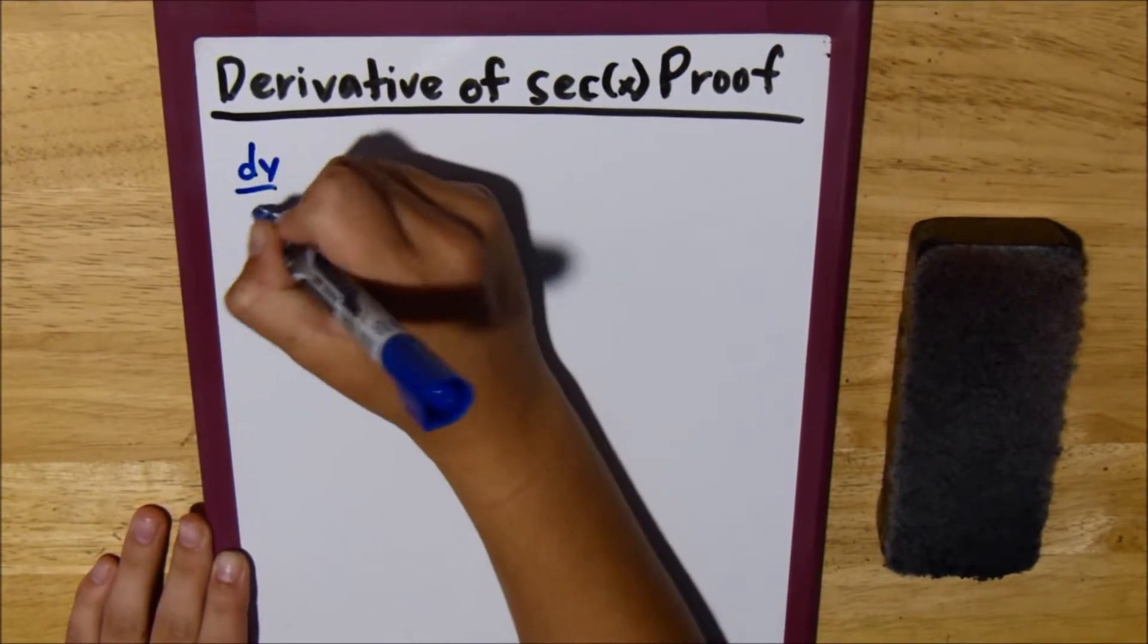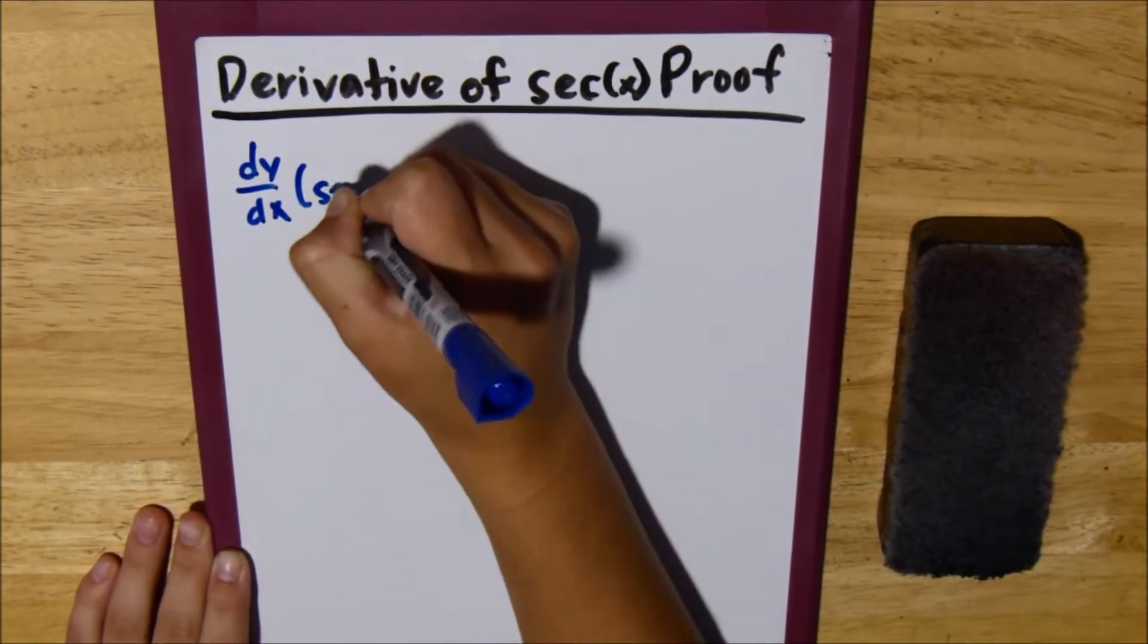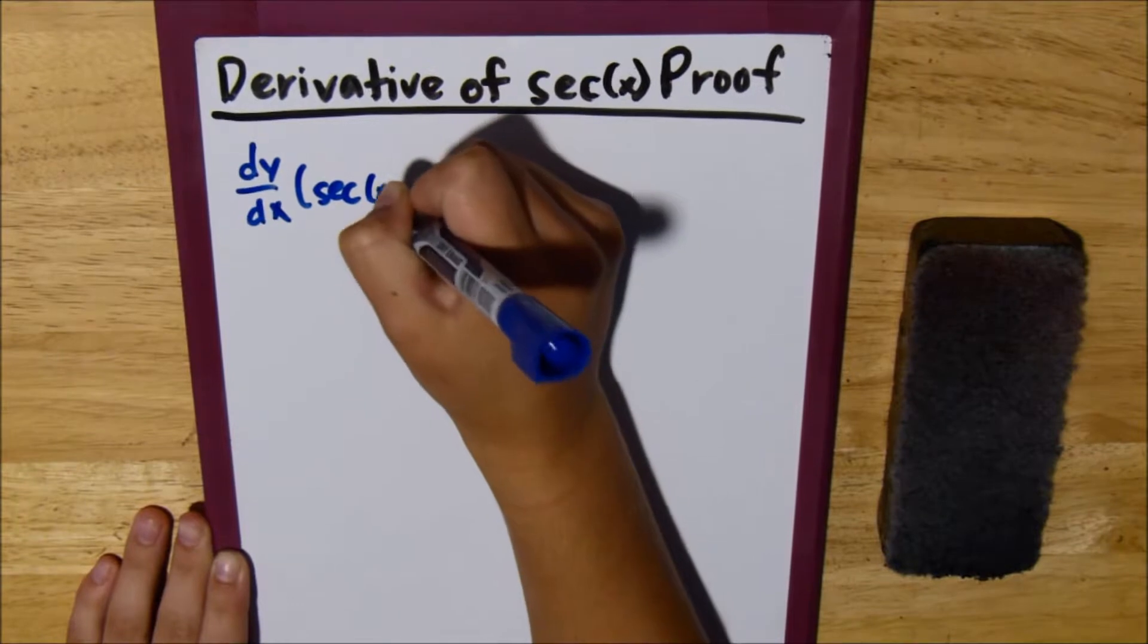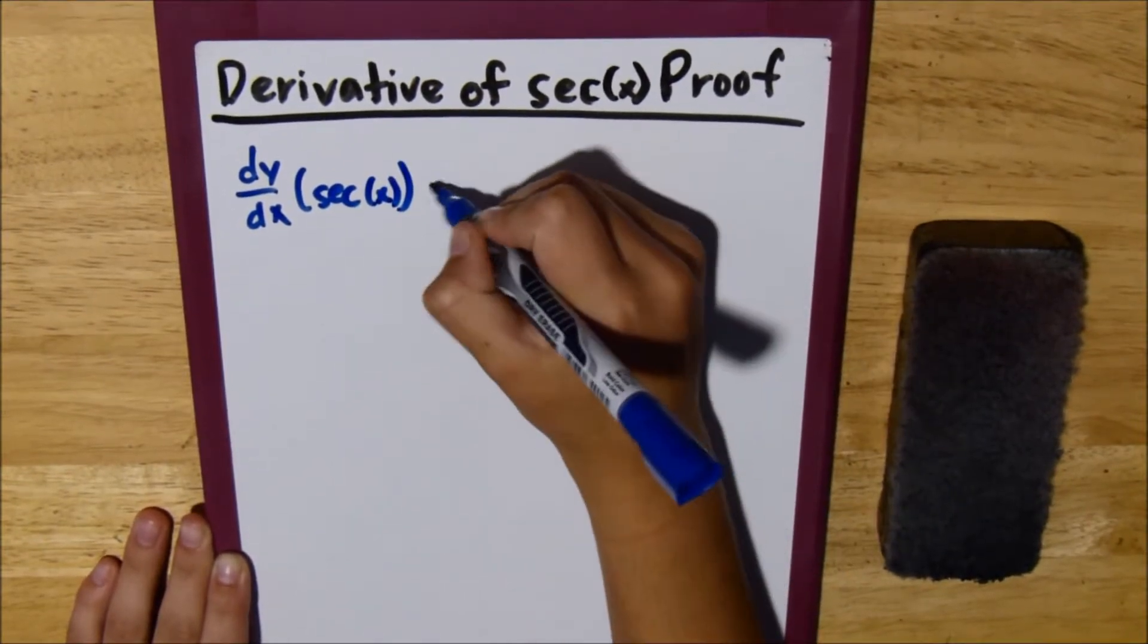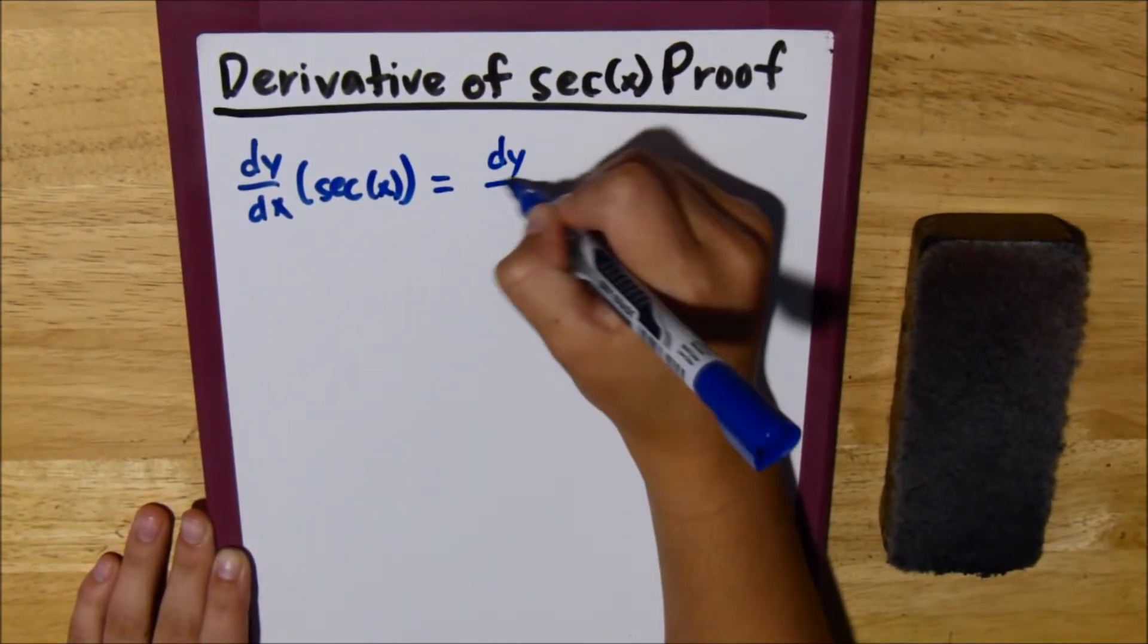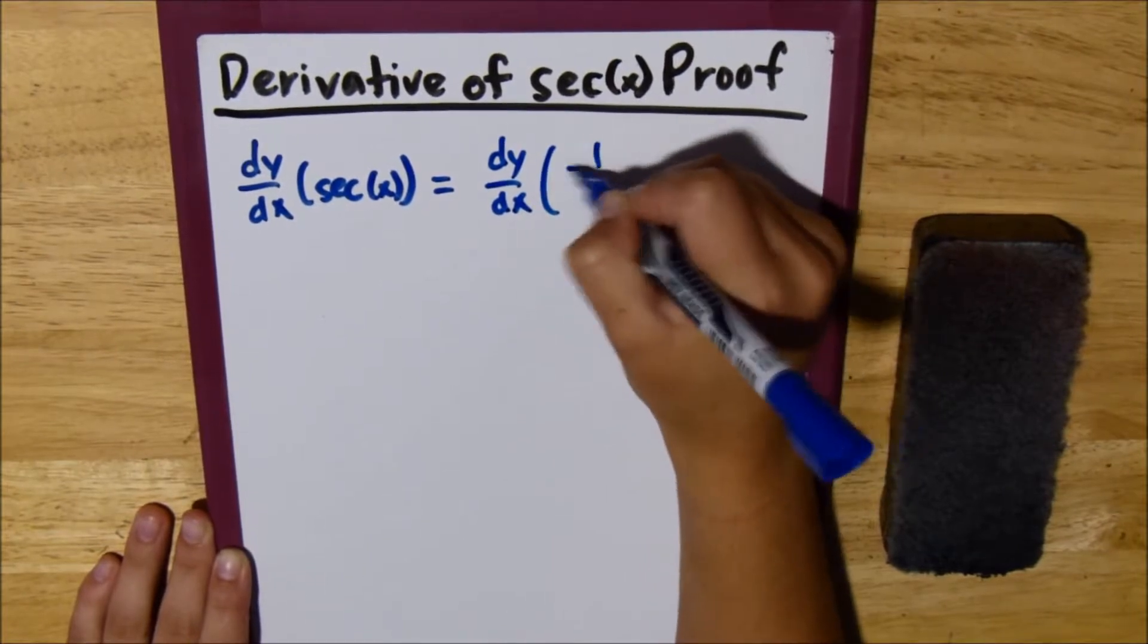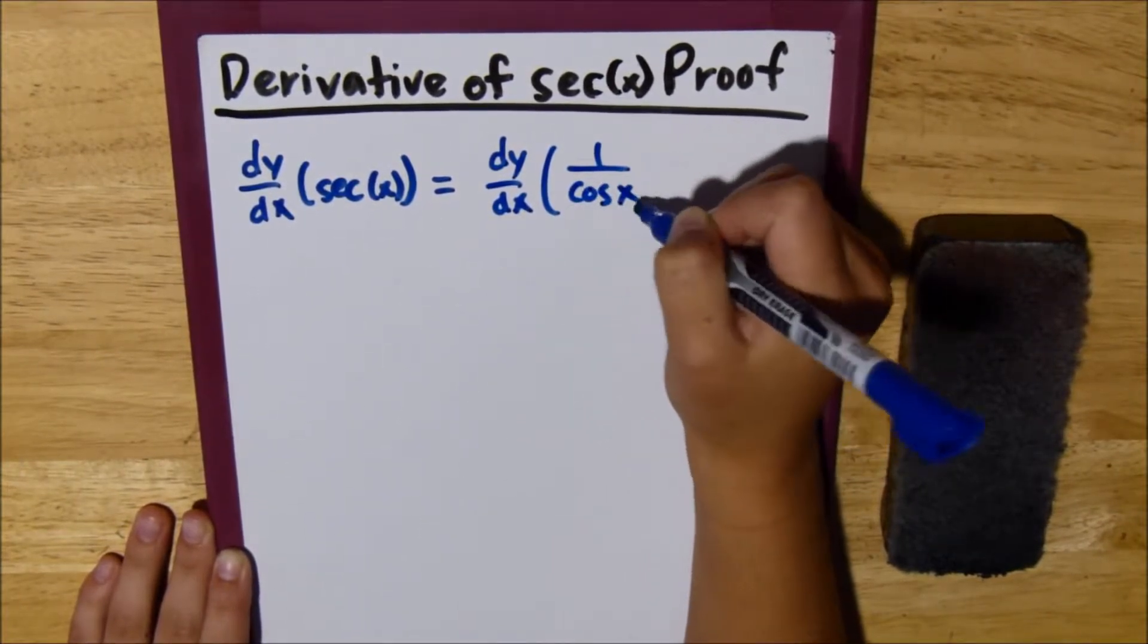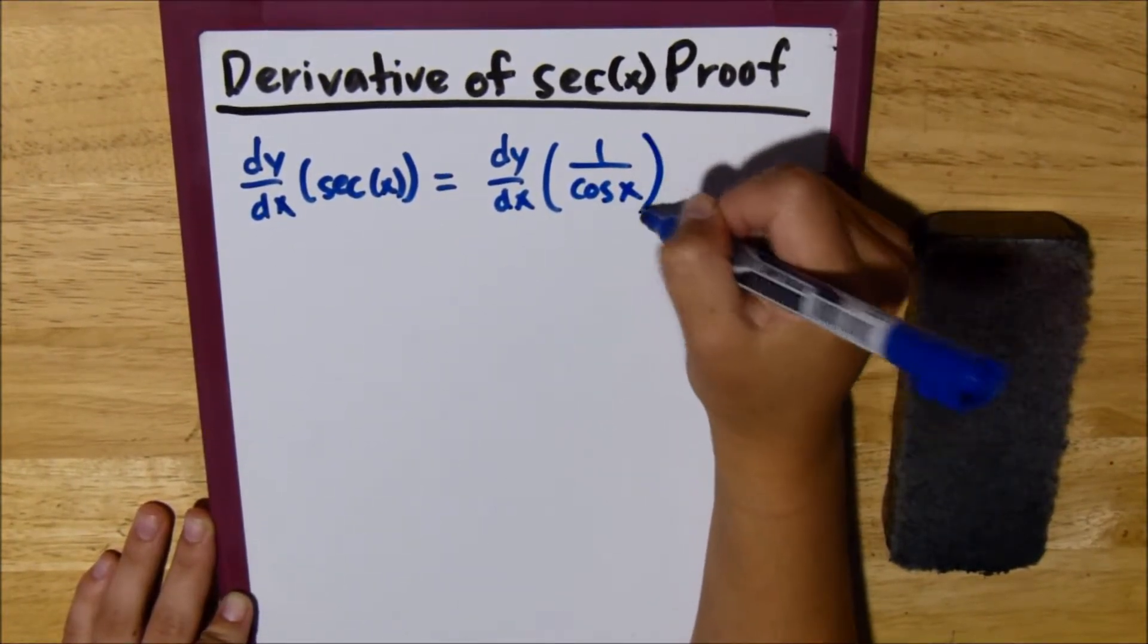So if we write out the derivative of secant of x, we can say that that is the same thing as the derivative of 1 over cosine of x by definition.